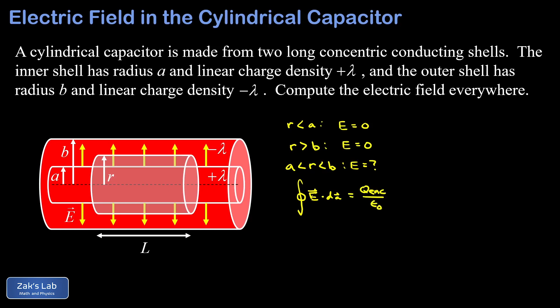Because E is perfectly radially outward, that makes it parallel to the end caps of the Gaussian surface, in other words perpendicular to the area vector. And so those end caps are going to contribute nothing to the total electric flux through this surface.